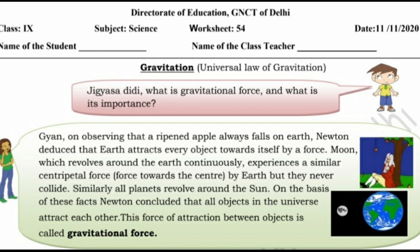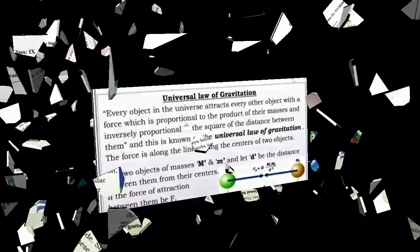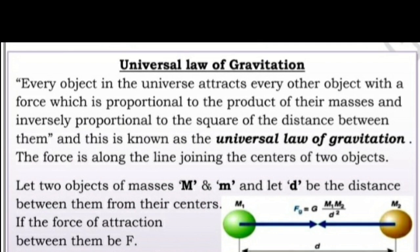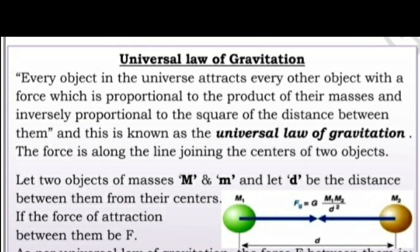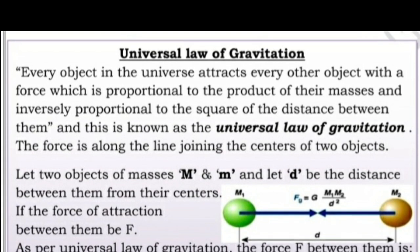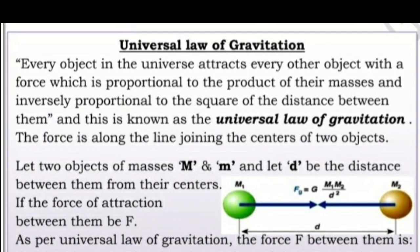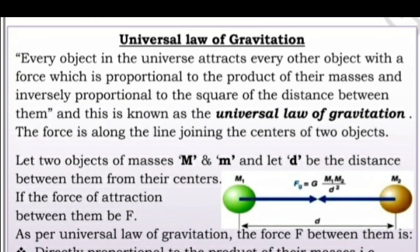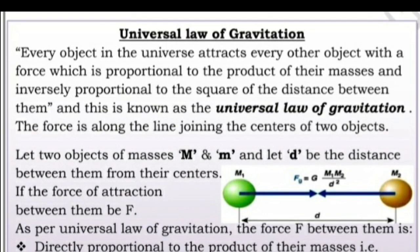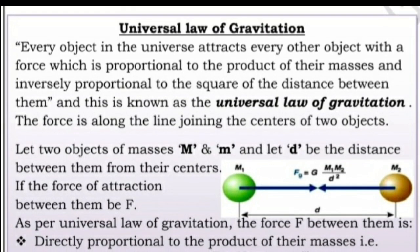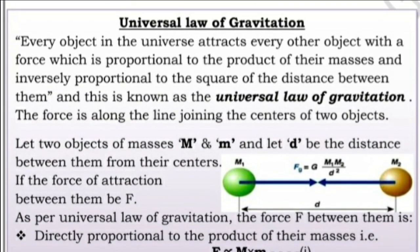When Newton observed the apple falling to the earth, he worked on gravitational force and made some principles. Universal Law of Gravitation: every object in the universe attracts every other object with a force which is proportional to the product of their masses and inversely proportional to the square of the distance between them. This is known as the Universal Law of Gravitation.